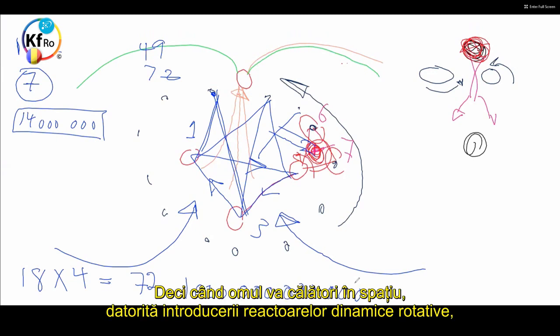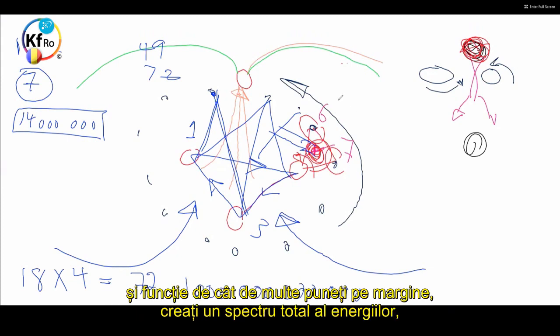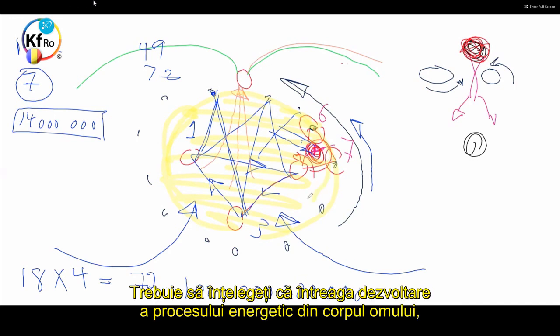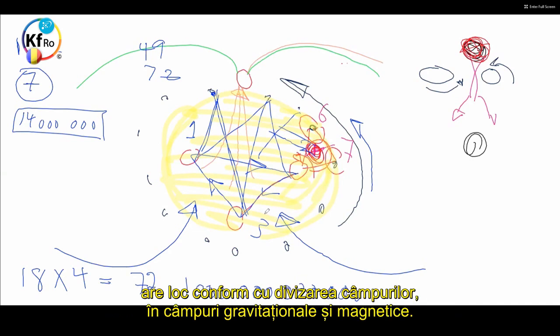So when the Man travels in Space, due to introduction of the dynamic rotating cores and how many you put cores on the boundary, you create a total spectrum of the energies which is needed for survival in Space. This is how you do not carry any food. You got to understand, the whole development of the process of the energy in body of the Man goes according to the split of the fields in Gravitational and Magnetic Field.